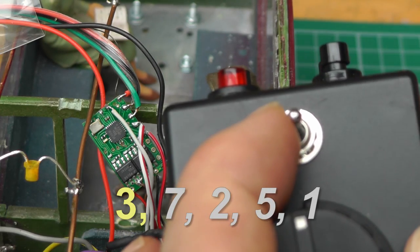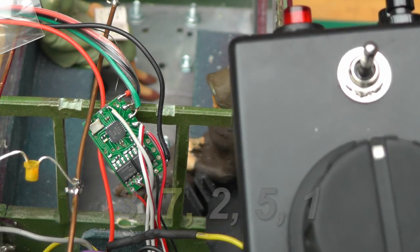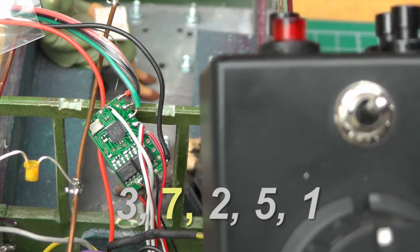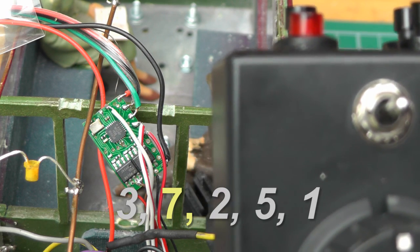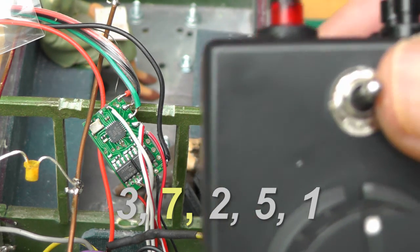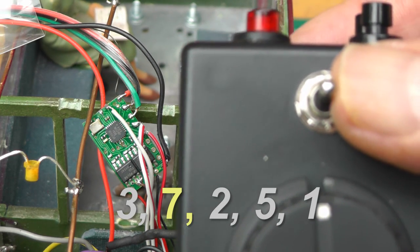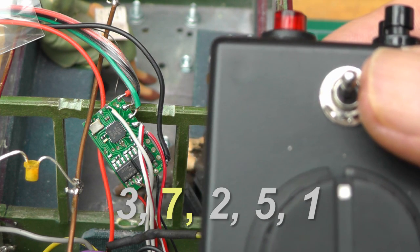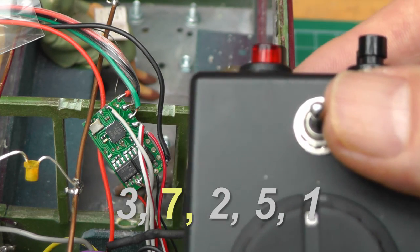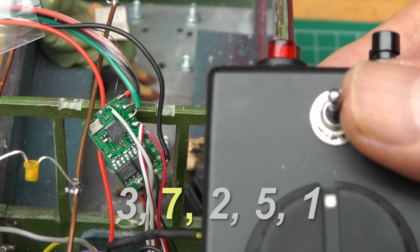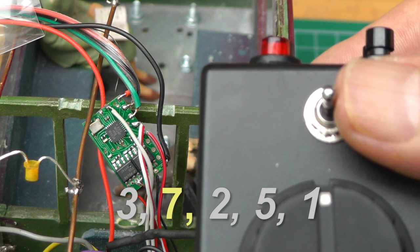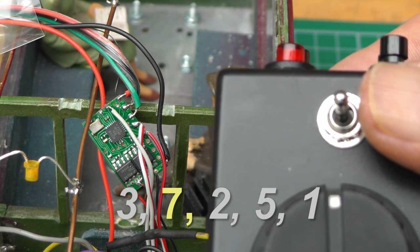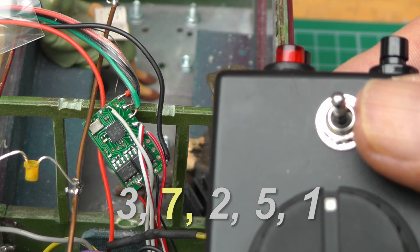So I now move the direction switch the other way to accept that. Now we're working on column 2 down the chart. Now I want that to be 7 for pad 7. So at the moment it's flashing 1, so I advance it. It's now flashing 2, 3, 4, 5, 6.